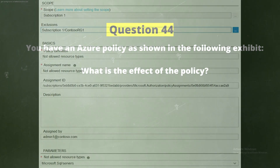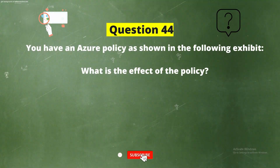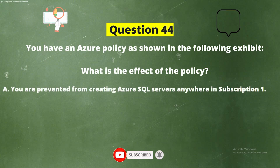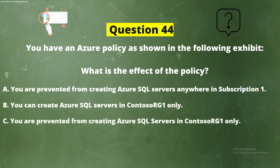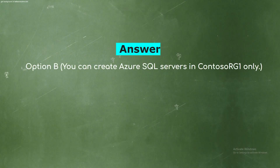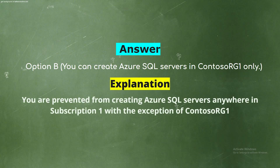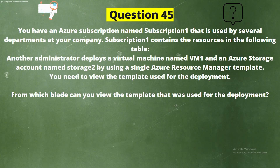Question 44: You have an Azure policy as shown in the following exhibit. What is the effect of the policy? Option A: You are prevented from creating Azure SQL servers anywhere in Subscription1. Option B: You can create Azure SQL servers in ContosoRG1 only. Option C: You are prevented from creating Azure SQL servers in ContosoRG1 only. Option D: You can create Azure SQL servers in any resource group within Subscription1. The correct answer is Option B: You can create Azure SQL servers in ContosoRG1 only. Explanation: You are prevented from creating Azure SQL servers anywhere in Subscription1 with the exception of ContosoRG1.